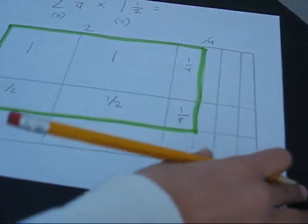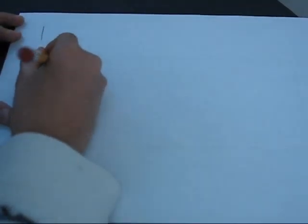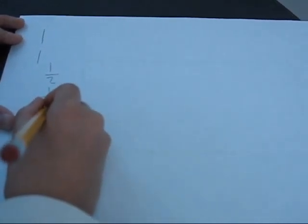Now we're going to flip the paper over and write: one, the other one, the one half, the other one half, the one fourth, and one eighth. And then the line and the addition symbol.